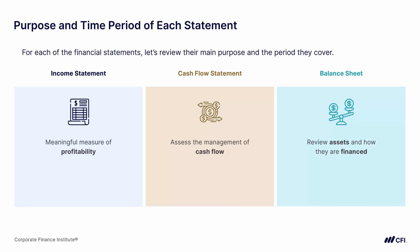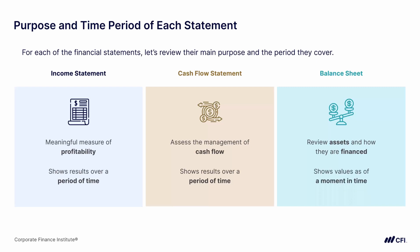Now we have a sense of the main purpose of each one of these three statements. But what about the time period they cover? For the income statement and the cash flow statement, they both show results over a period of time — for example, the most recent quarter or fiscal year. But the balance sheet is different: it shows values as of a moment in time, specifically as of the end of the period.